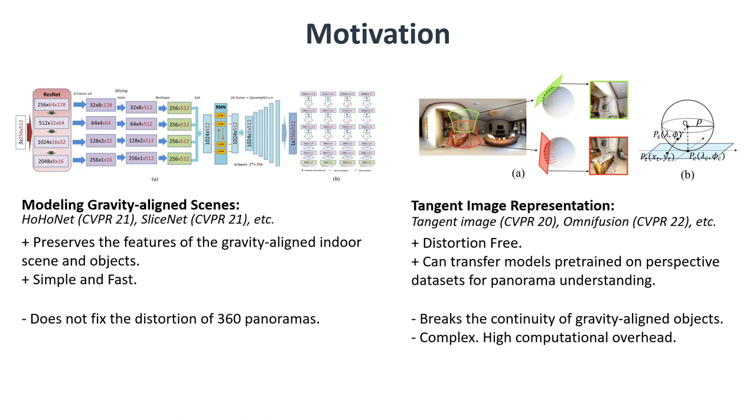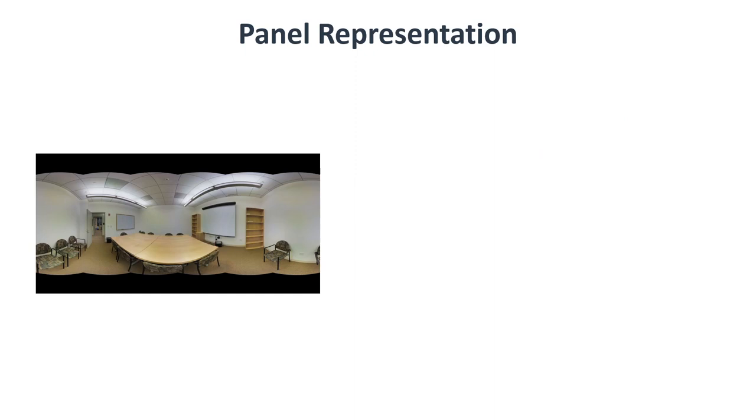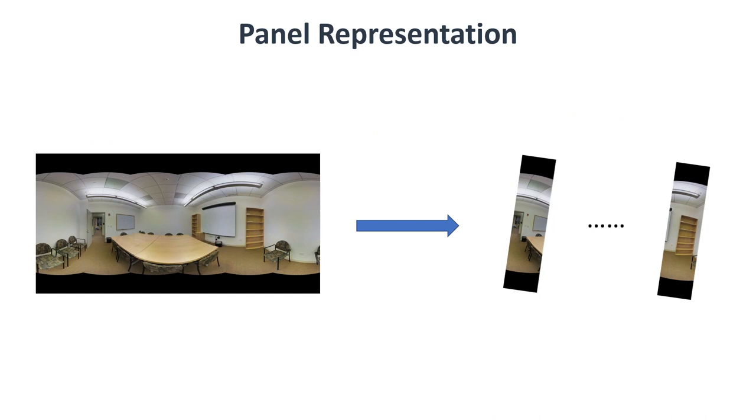Our goal is to reduce the negative effects of panorama distortion while preserving the continuity of the features of the gravity-aligned objects. Rather than fixing the distortion explicitly, we design the panel representation to learn the distortion. Given a 360 panorama, we first segment the panorama into panels with overlaps via a vertical sliding window. Since panoramas are continuous and seamless in the horizontal direction, we extract the panels across the left and right edges.